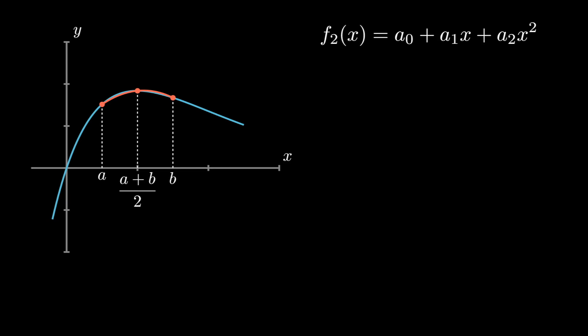To find three unknowns we need three equations. Since f̃ passes through three points, those points must satisfy the equation of f̃. Taking the first point (a, f(a)) and substituting x = a and f̃ = f(a), we get our first equation.